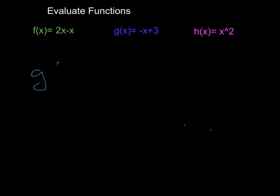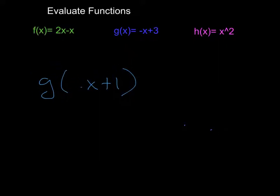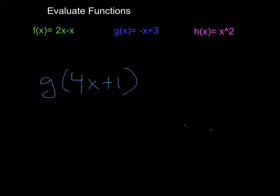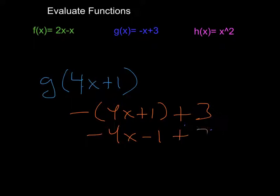Let's do g of 4x plus 1. Into the g function, I'm going to plug in 4x plus 1. So that becomes negative 4x plus 1 plus 3, which simplifies to negative 4x minus 1 plus 3, giving negative 4x plus 2. Just simplify as much as you can and leave your answer.